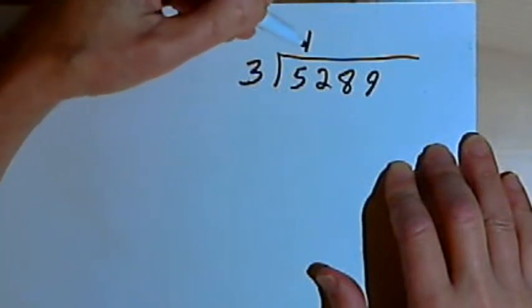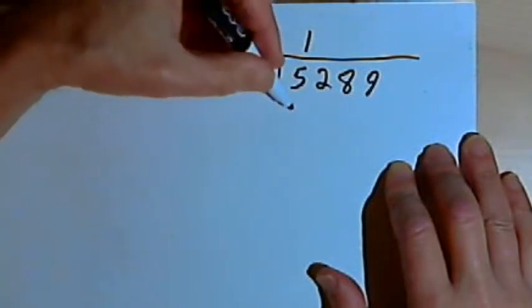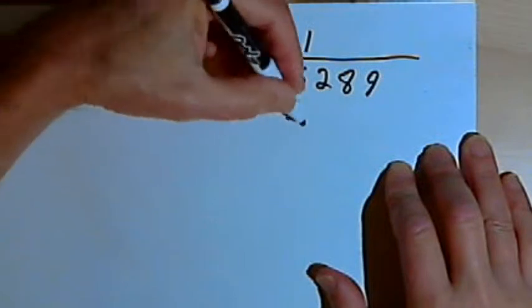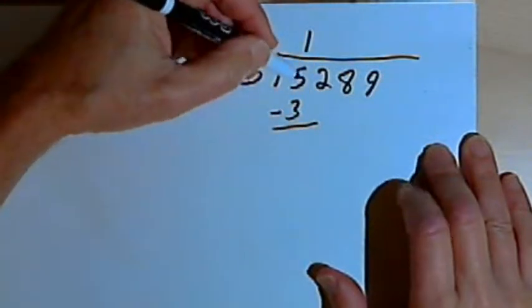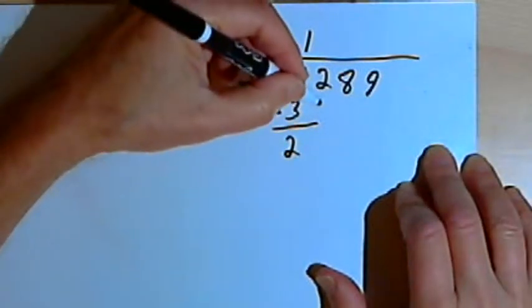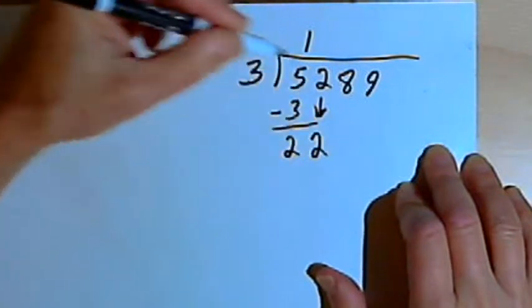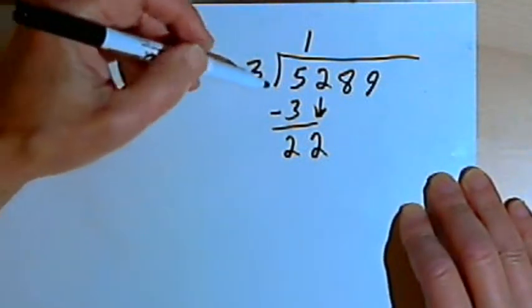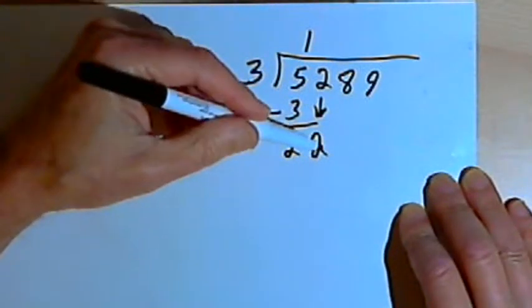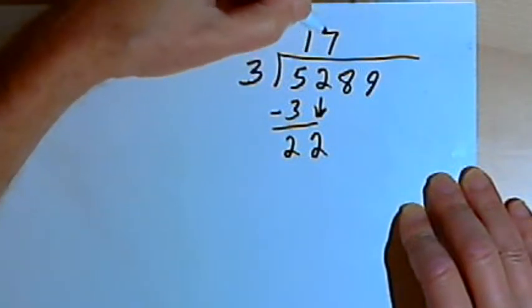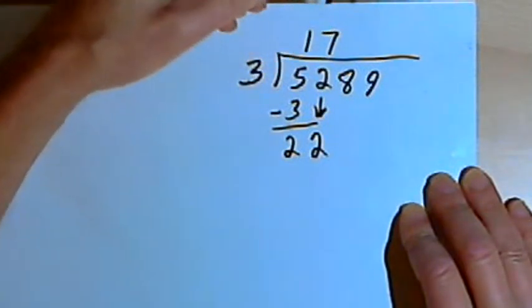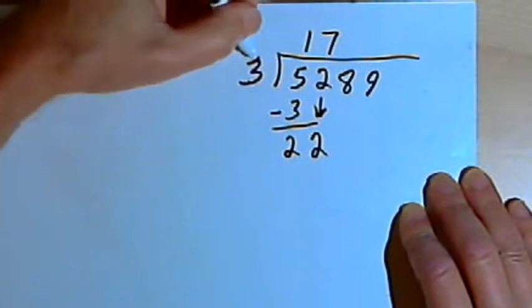I'll write the 1 above the 5, multiply 1 times 3, I get a 3, subtract 5 minus 3 is 2, bring down my next digit. So now I've got 22. 3 divided into 22 goes 7 times. I'll write the 7 above the 2.